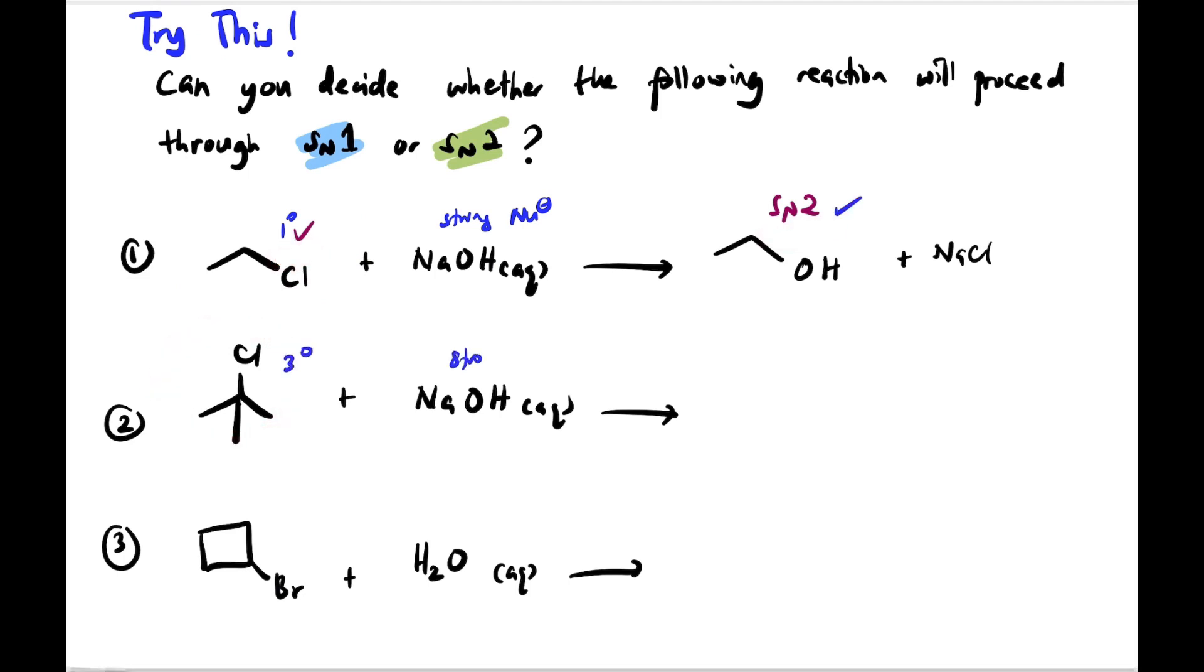Next, we have tertiary haloalkane and again, strong nucleophile NaOH. But we look at its class first. First, we replace Cl with OH. So our product is NaCl. So this one's class is tertiary. It will favor SN1. Too many obstructions there, guys. That's why we do it as SN1.